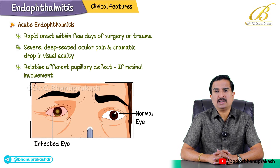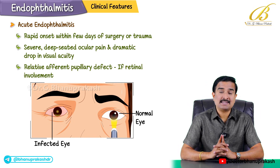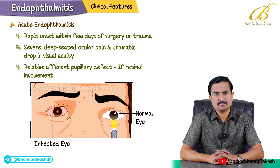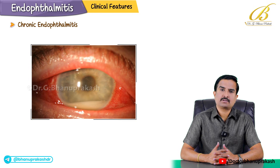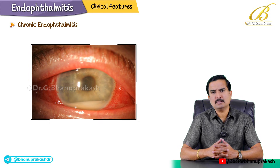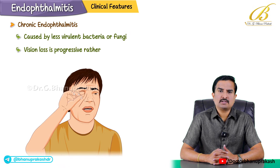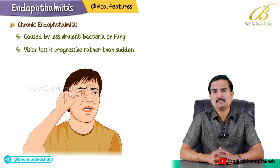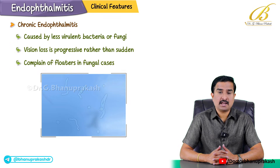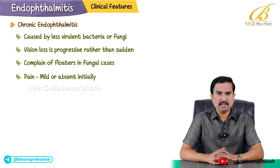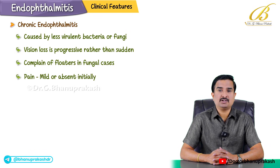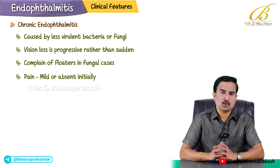A relative afferent pupillary defect can be noted if there is significant retinal involvement. Chronic endophthalmitis develops more gradually, over weeks or even months, and is often caused by less virulent bacteria or fungi like Candida. Vision loss is progressive rather than sudden, and patients may complain of floaters, especially in fungal cases. Pain may be mild or absent initially, leading to delay in diagnosis.